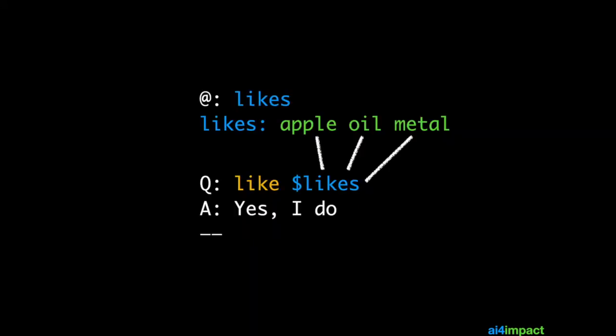The way to read these template rules is that the dollar sign likes takes on one of the things it represents. Because likes is either apple, oil or metal, dollar sign likes will match for any one of those things. This combination of Q and A and the double dash at the end constitute a template. You must end all your templates with a double dash. A template can consist of more than one Q and more than one A, but for now simple templates consist of one or more Q's and a single A section.